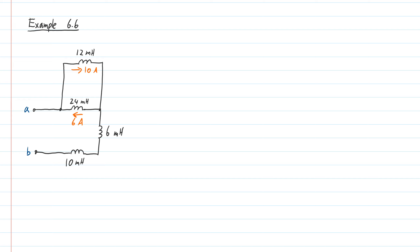Here I have an inductor network and we are asked to simplify this into an equivalent inductance. Two things I need to do: calculate the initial current and calculate the equivalent inductance. Let's look at the current first. I define i-naught here for initial current and label it on my circuit. I can look at this node and apply KCL.